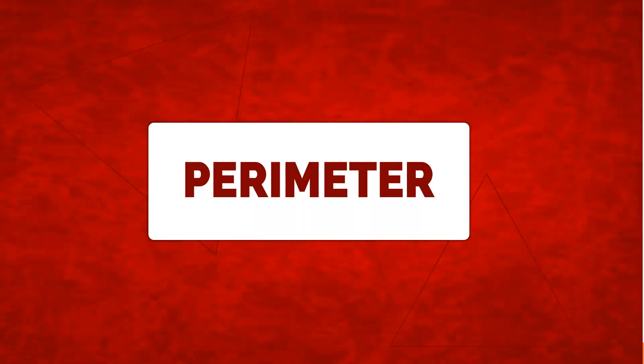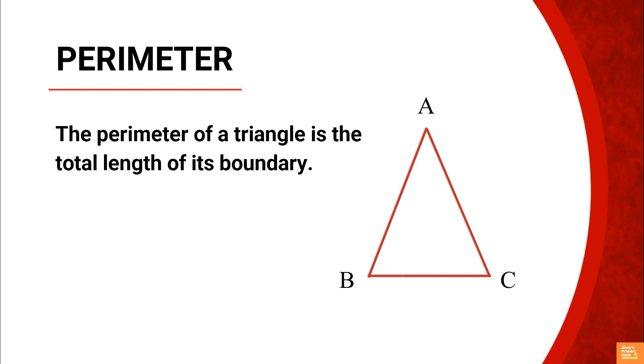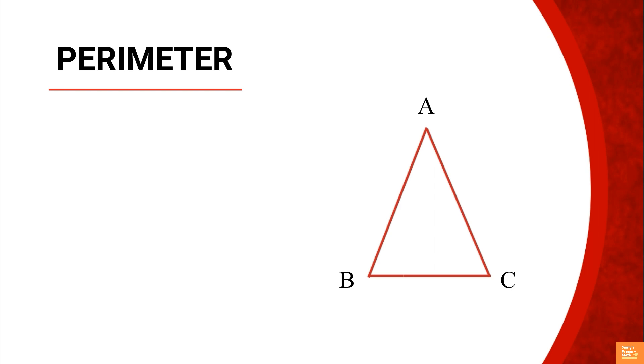Perimeter: The perimeter of a triangle is the total length of its boundary. Therefore, the perimeter of a triangle is the sum of the lengths of its three sides, whether they are equal or unequal.